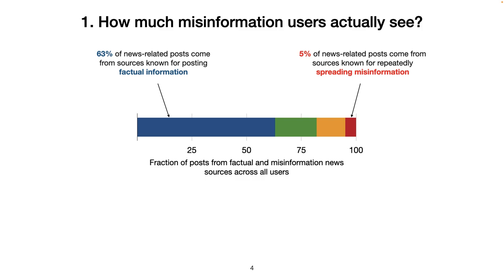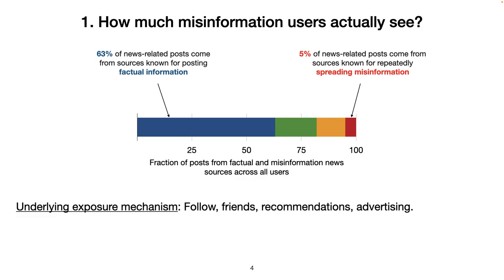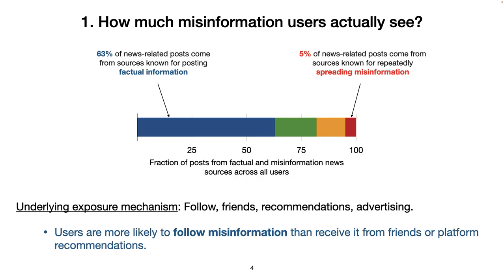Then, we were interested in understanding the reasons or the underlying mechanisms responsible for this exposure to misinformation. We have four choices: users can receive misinformation first because they follow a misinformation source, second because their friends posted this misinformation, third because the platform is recommending it to them, or finally because an advertiser paid the platform to show them this misinformation. Interestingly, we observed that users are more likely to see misinformation because they follow misinformation sources themselves, rather than being exposed because of algorithms or through their friends.